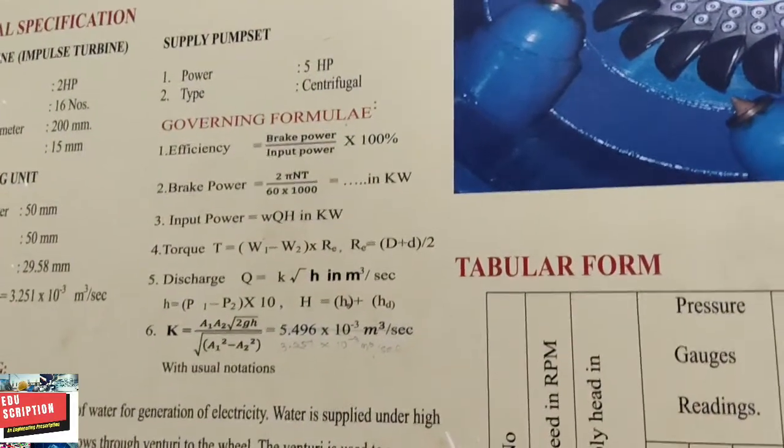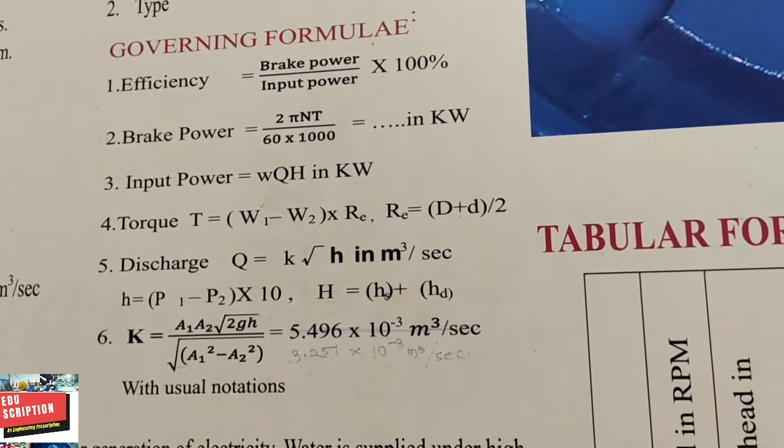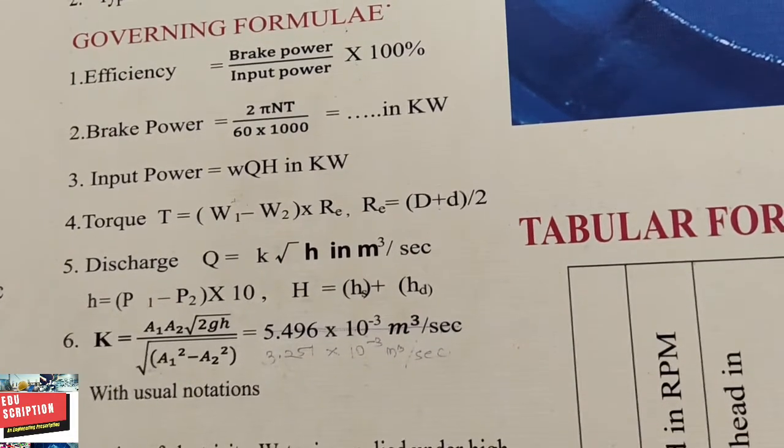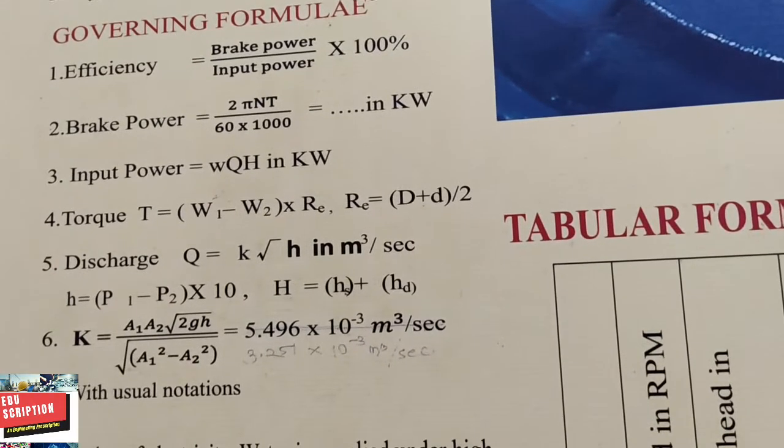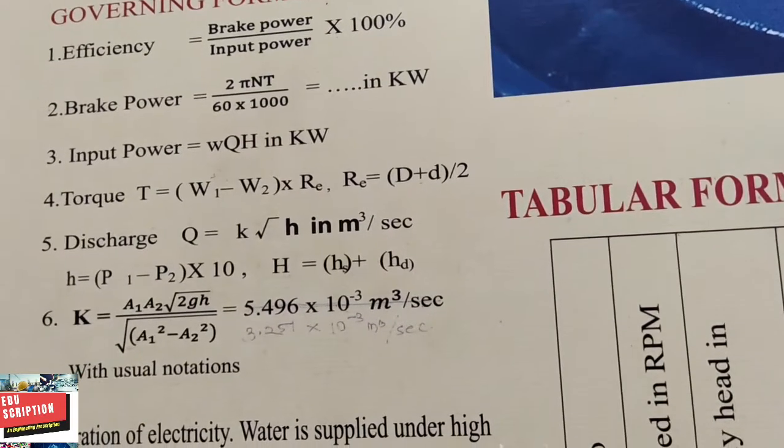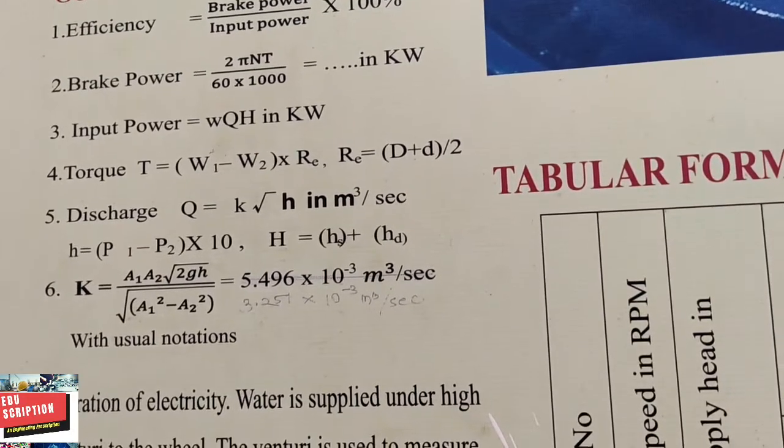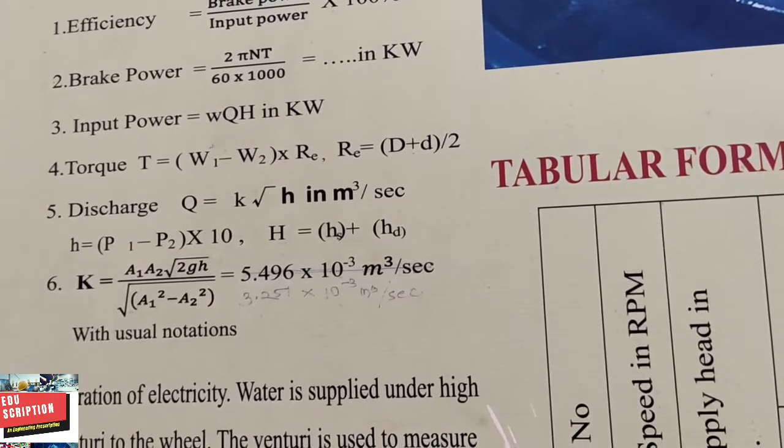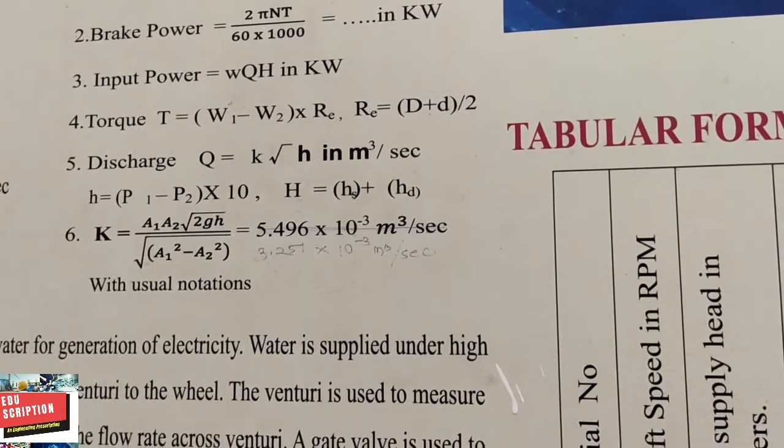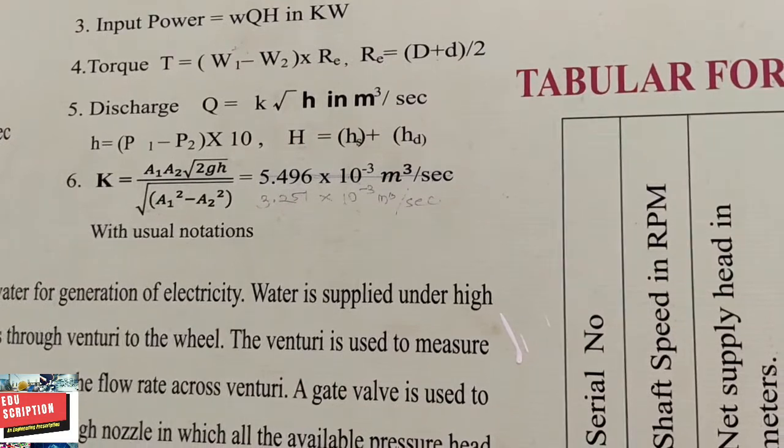Before starting, first you know the governing formulas. Efficiency is your brake power divided by input power into 100%. Brake power is 2πNT divided by 60,000, and input power is wQH. In this brake power, T is the torque. For calculation of torque: W₁ and W₂, where W₁ is the dead weight and W₂ is the spring balance weight. Rₑ is the effective radius. Effective radius is diameter of the rope plus diameter of the brake drum divided by 2.